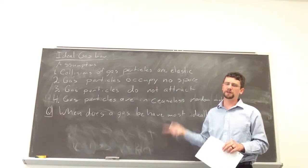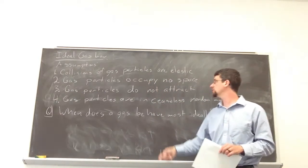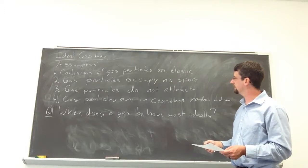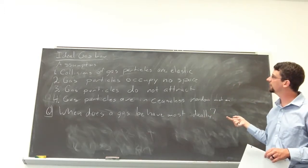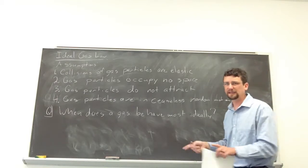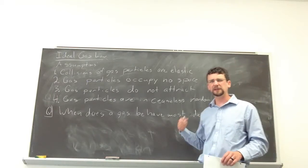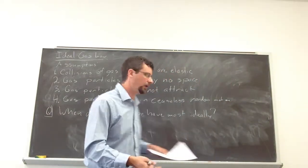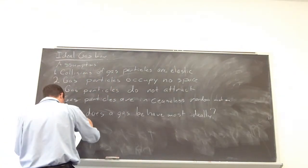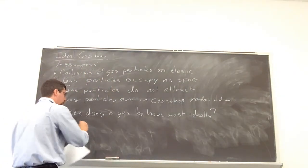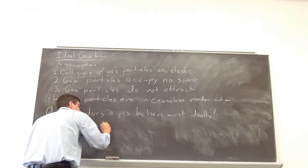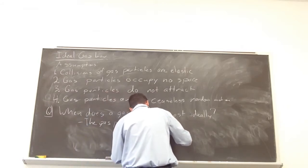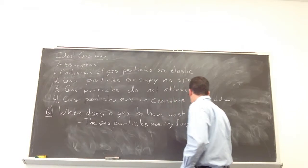So, this is where we want our assumptions to be true. So, we have to think of different experimental conditions where we can try to make these assumptions as true as possible. So, let's see. We want them to be in ceaseless random motion. We want the particles to have elastic collisions. So, if we can think of an experimental setup where that happens, that would be high temperature. The more random motion you have, the better off, or the more true these assumptions are. So, we need the gas particles moving fast. Fast. So, that's going to be a high temperature.